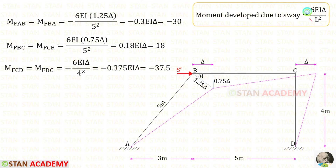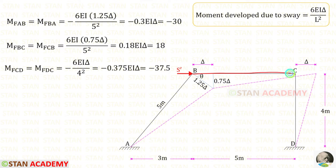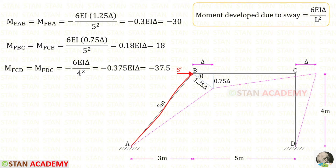Now we are going to find the moments developed due to sway. The formula is 6EI delta upon L squared. We know that the sway occurs towards the right side, so in the inclined member AB and the vertical member CD the sway moments will be negative. In the horizontal member BC, the displacement is on the left side, similar to sinking or settlement of supports. Since sinking occurs on the left side, the sway moments for BC will be positive. In the inclined member there are two fixed end moments: M of AB and M of BA. The length of AB is 5, and we apply the sway displacement of 1.25 delta.